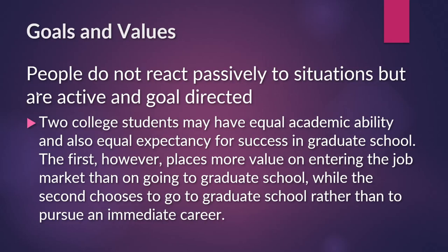We also have goals and values as mediating variables. People do not react passively to situations — we are active and goal-directed, and we differ because we have different goals and values. Two college students may have equal academic ability and equal expectancy for success in graduate school. However, the first places more importance on entering the job market, while the second chooses to go to graduate school. They have the same ability but different values — that's why we behave differently from the people around us.